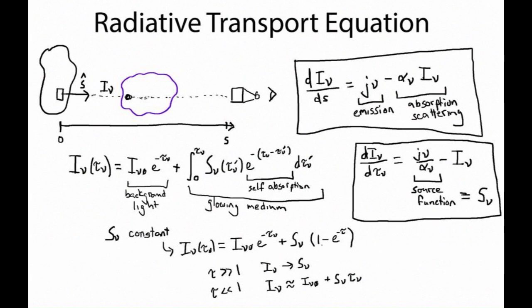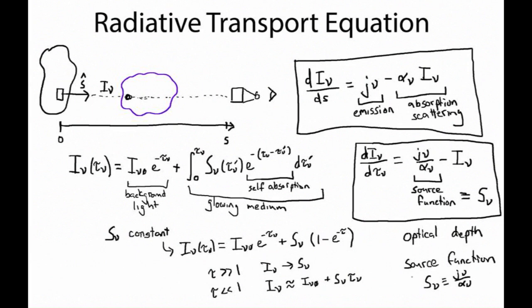Those are the basics of the radiative transport equation. The specific intensity of a ray passing through a medium is given by the attenuation of background light by the optical depth, plus a term it picks up from emission inside the medium accounting for self-absorption — generally phased in as 1 minus e to the minus optical depth. The key constructs are optical depth, optically thin vs. optically thick, and the source function — defined as the ratio of emission to absorption coefficient — which is the intensity the radiation asymptotes to as it passes through an optically thick medium.